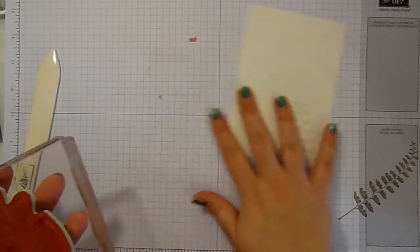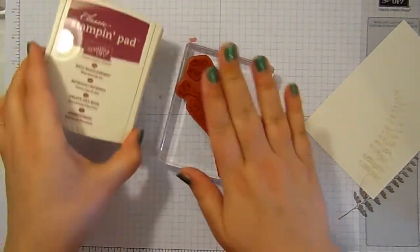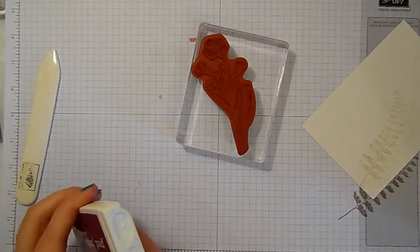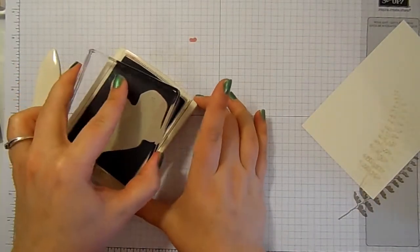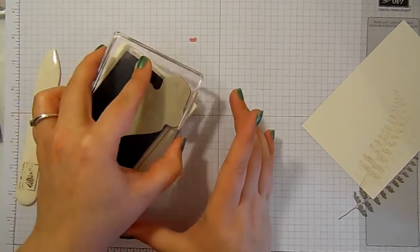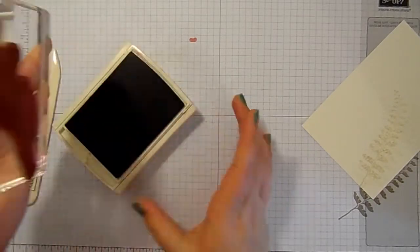Then, this is the watercolor bit. I've got the flower stamp mounted up, and Rich Razzleberry ink, and I'm going to ink up my stamp really, really well. I'll get lots and lots of ink on there.